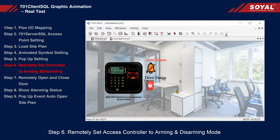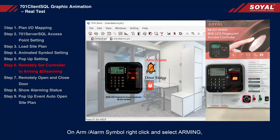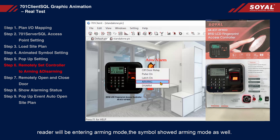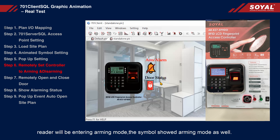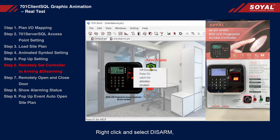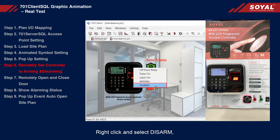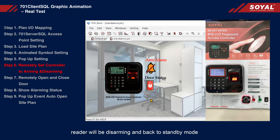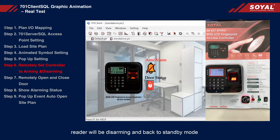Step 6: Remotely set access controller to arming and disarming mode. On the arm/alarm symbol, right-click and select Arming — the reader will enter arming mode and the symbol will show arming mode as well. Right-click again and select Disarm — the reader will be disarming and return to standby mode.